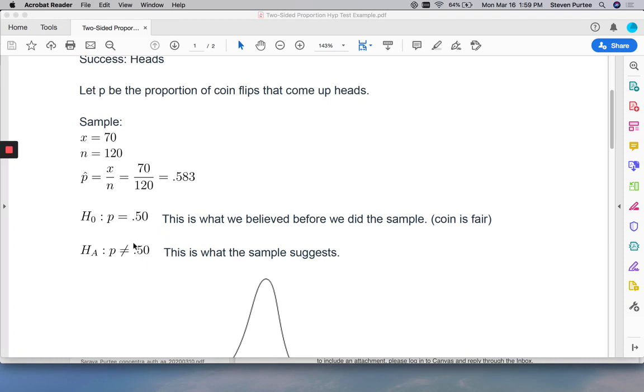If the coin's not fair, it might give you too many heads or too many tails. We don't care which way. Either way is still a messed up coin. So we do this as a two-sided hypothesis test. Anytime we don't care if a rate is above or below, if we just care if it's different than what we believed, we do a two-sided test.